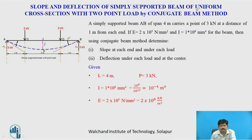Now, slope and deflection of a simply supported beam of uniform cross-section with two point loads: a simply supported beam AB having a span of 4 meters carries a point load of 3 kilonewtons at a distance of 1 meter from each end. Using the conjugate beam method, determine the slope at each end and under each load, as well as the deflection under each load and at the center.